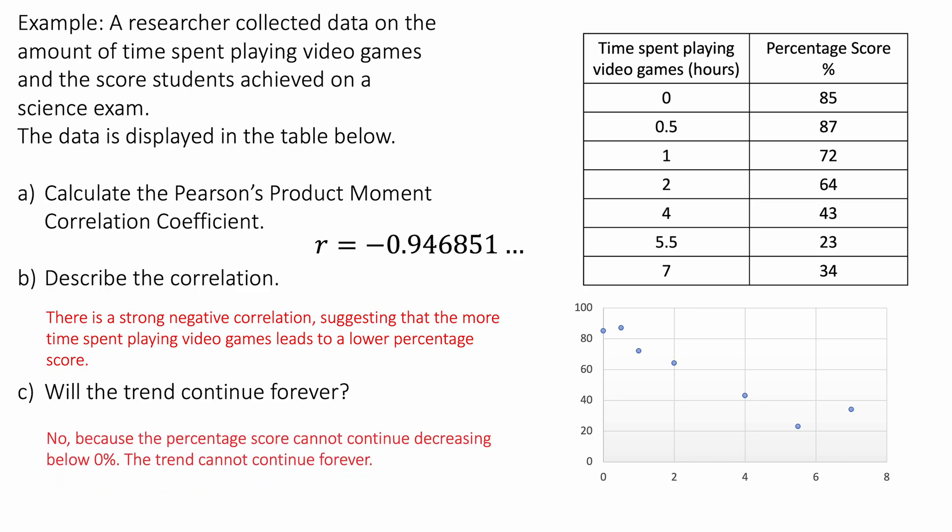Now, will the trend continue forever? I've got a scatter graph here. No, the trend won't continue forever because there is a minimum percentage possible. If you played video games for a million hours, you still would not get a score of less than 0%. Because the percentage score cannot continue decreasing below 0%, the trend cannot continue forever.